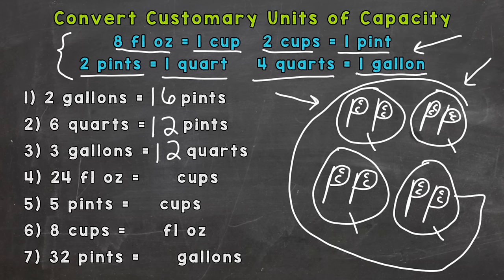Number four: 24 fluid ounces equals how many cups. We know that eight fluid ounces creates one cup, so we need to split this 24 fluid ounces into groups of eight. Each one of those groups of eight is a cup, so we need to do 24 divided by eight, and that's going to give us three cups.